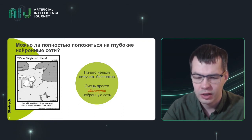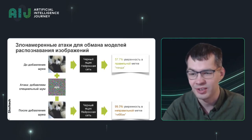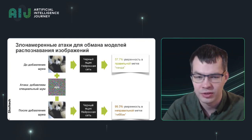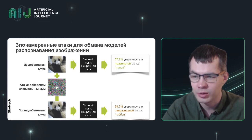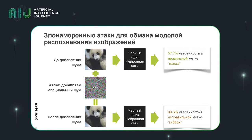Seemingly, this kind of neural network is very easy to deceive — to cheat. Here is a picture, and then we add a specially generated, not very large perturbation. We get a picture that looks the same to a human being — he will say we have a panda both in the original and the distorted version. But if we show this distorted picture to the neural network, it will think that it's a special noise and with 100% certainty will say that it's a gibbon or an ape.